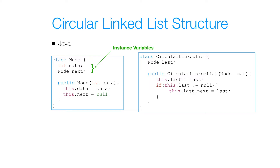Then I have my circular linked list class. I have a last reference that we use to keep track of the last node in my list. Not only am I initializing my instance variable last with my argument last, but I'm also setting last.next to the next node in the list so it becomes circular. Since my last node is the only node, I set last.next to itself. This can also be done outside of the constructor.